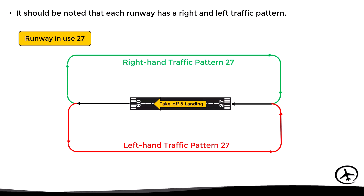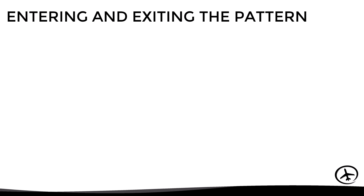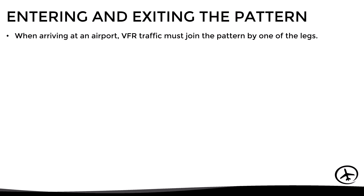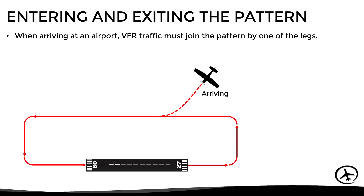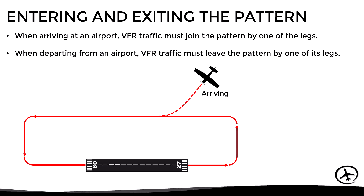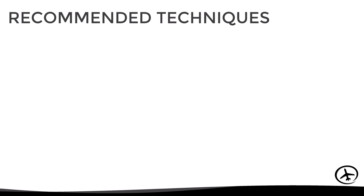Now that we know all the important information related to the traffic pattern, let's move on to how to enter and exit a pattern. As a general rule, when arriving at an airport, VFR aircraft must join the pattern by one of its legs and then proceed with the landing. When departing, VFR traffic must leave the pattern by one of its legs depending on the direction they want to continue their flight.